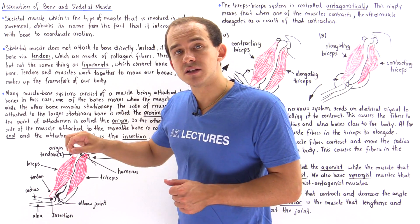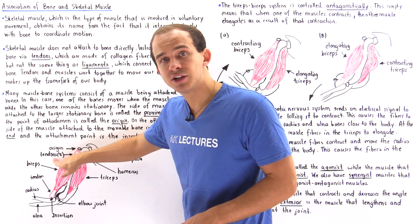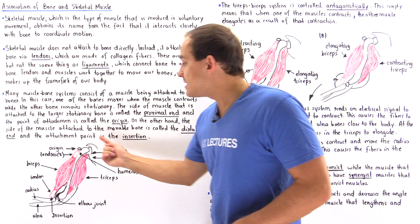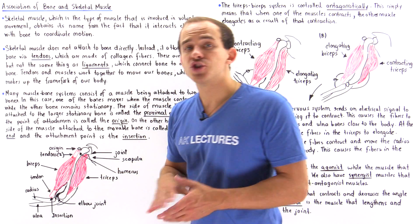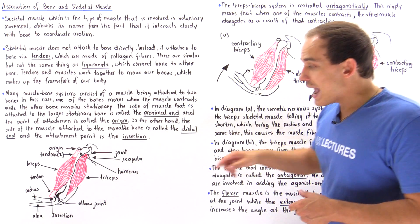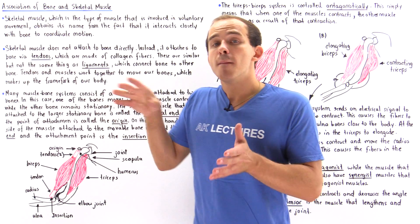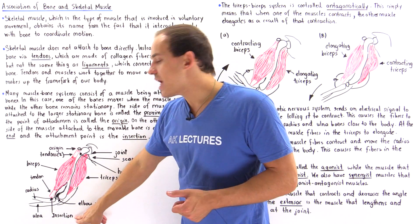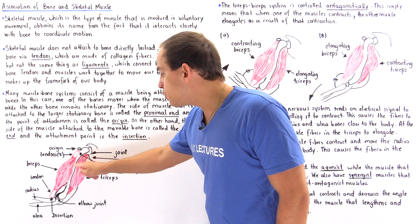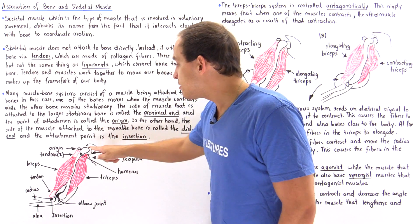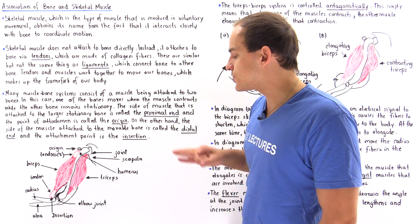The point where the muscle attaches — via our tendons — to the bone that does not move is known as the origin. The side where the origin is located is known as our proximal end, while the other end is known as our distal end, and that location is known as our insertion. So the point where the muscle attaches to our movable bone via the tendon is known as our insertion. The radius and ulna are the movable bones; the humerus is the immovable bone. The proximal end contains the origin, and the distal end contains our insertion.